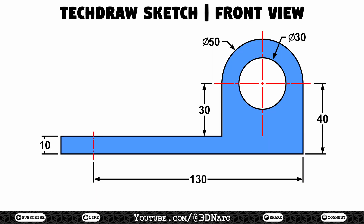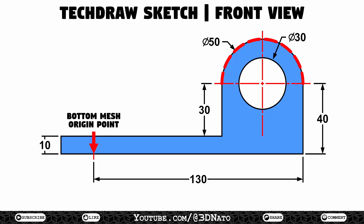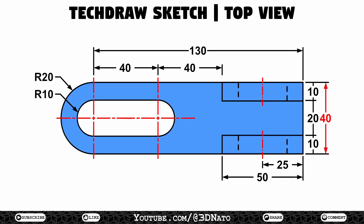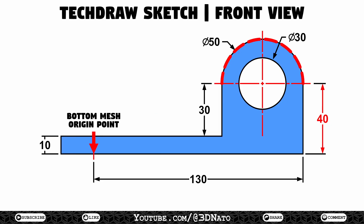Now let's start sketching the front view. The main basic shape here is this 50mm diameter semicircle with a 30mm diameter hole — just keep in mind they are specified in diameter instead of radius. Let's check all measures to place this 50mm semicircle. As this line is the origin point of the bottom mesh, we'll calculate the position based on this point. On X axis, we need to place it at 130mm minus the radius, which is 25mm. On Y axis, as we can see on the top sketch, we need to place it at 40mm divided by 2, which is 20mm. On Z axis, we need to place it at 40mm, and the circle will need to be rotated 90 degrees on the X axis.